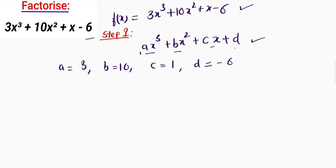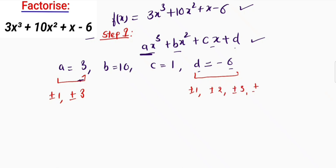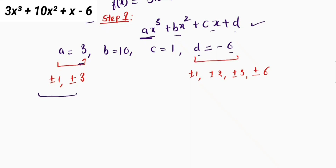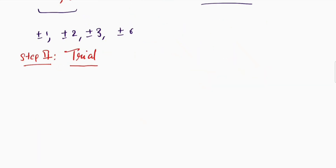Now we will find the factors of a, which is 3, and d, which is −6. The factors of 3 are ±1 and ±3. Similarly, the factors of the constant term d are ±1, ±2, ±3, and ±6. Combining the factors of a and d, we get ±1, ±2, ±3, and ±6.